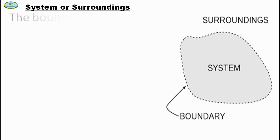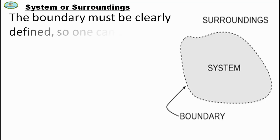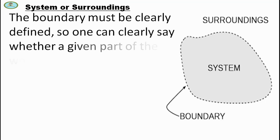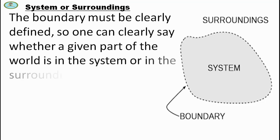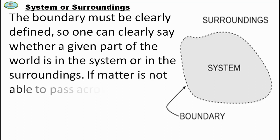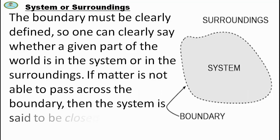The boundary must be clearly defined so one can clearly say whether a given part of the world is in the system or in the surroundings. If matter is not able to pass across the boundary, then the system is said to be closed. Otherwise it is open.